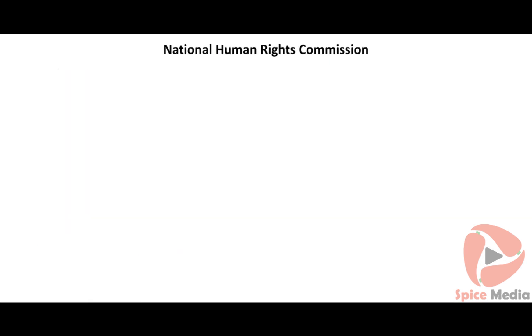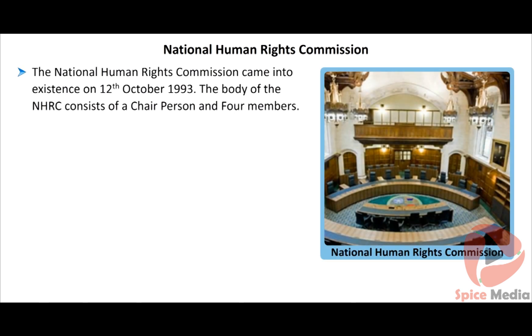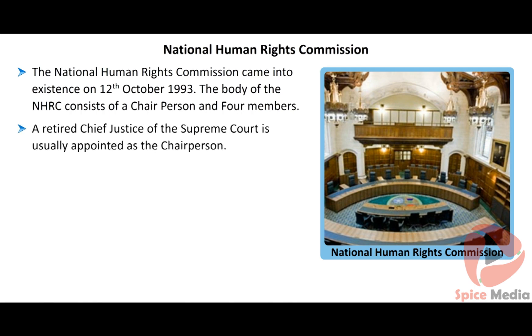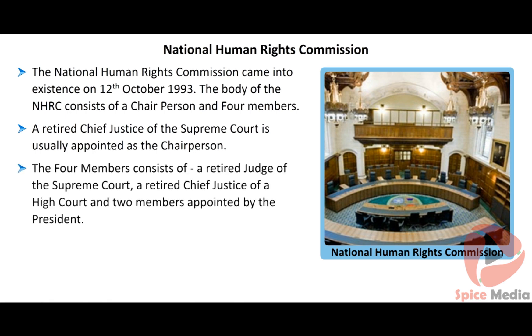The National Human Rights Commission came into existence on 12th October 1993. The body of the NHRC consists of a chairperson and four members. A retired Chief Justice of the Supreme Court is usually appointed as the chairperson. The four members consist of a retired judge of the Supreme Court, a retired Chief Justice of a High Court, and two members who possess practical knowledge and experience in human rights. They are appointed by the President.